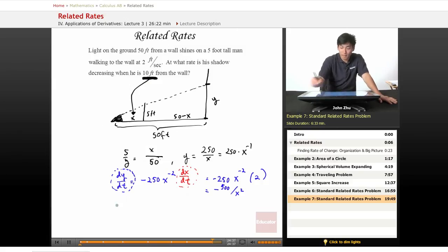So here they're giving you 10 feet, which is x. So let's solve for dy/dt equals negative 500 over 10 squared, which equals... actually...